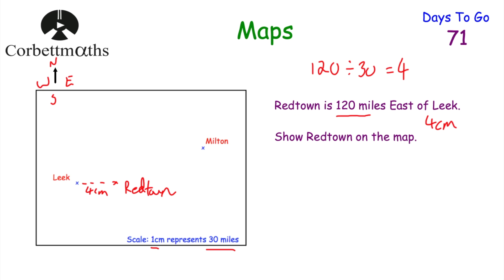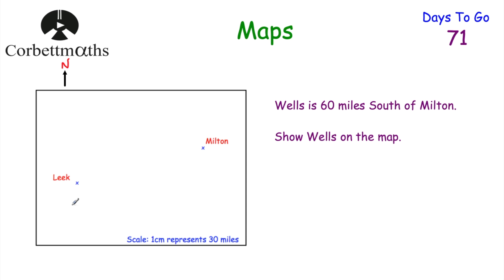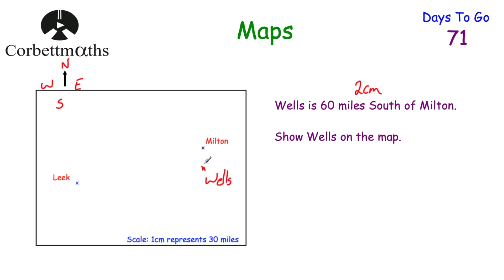Here's one for you to try. We've got a diagram with north going upwards, and Leake and Milton shown. We're told that Wales is 60 miles south of Milton — show Wales on the map. The scale is 1 centimetre represents 30 miles. Because it's 60 miles, that's 30, 60 — that's 2 centimetres. South is downwards, so Wales is going to be 2 centimetres below Milton. You get your ruler and pencil, measure 2 centimetres, mark where that is, and label it Wales.